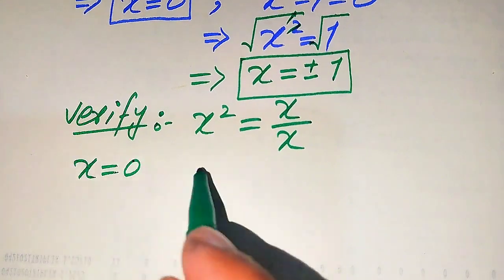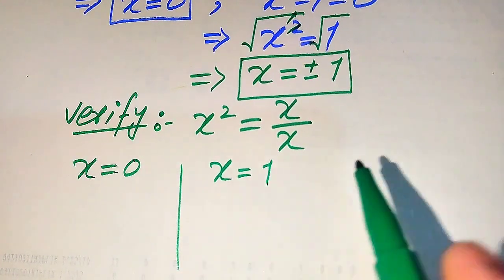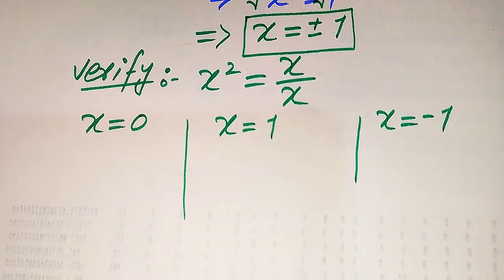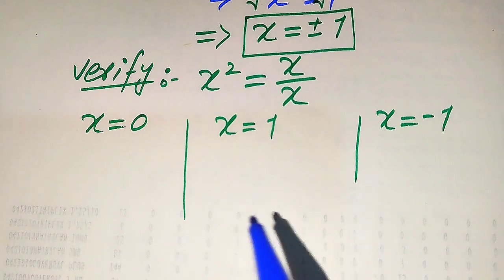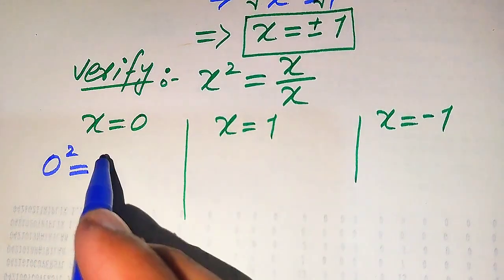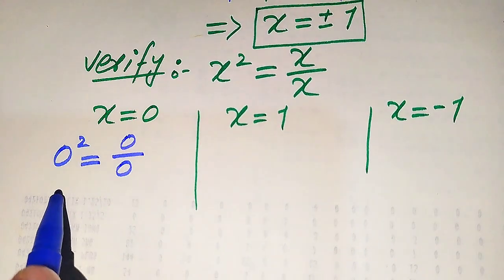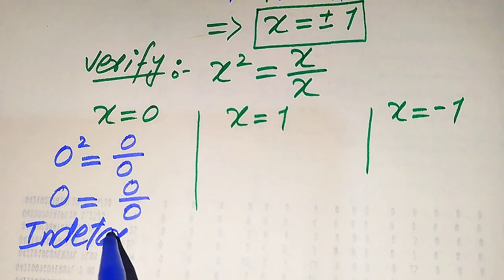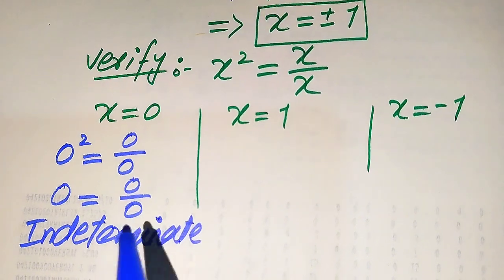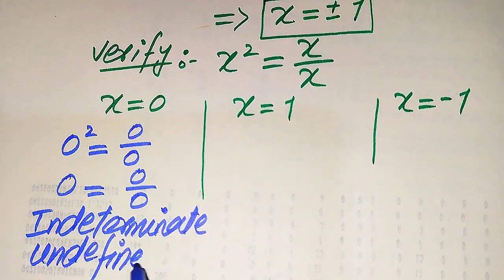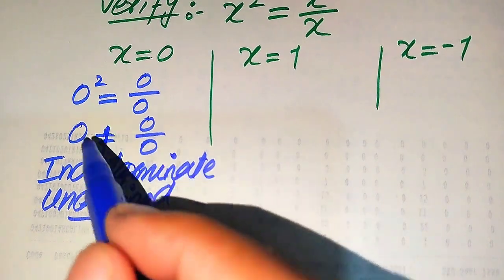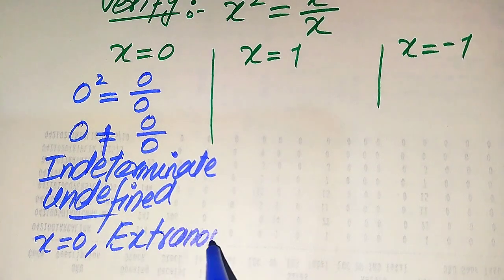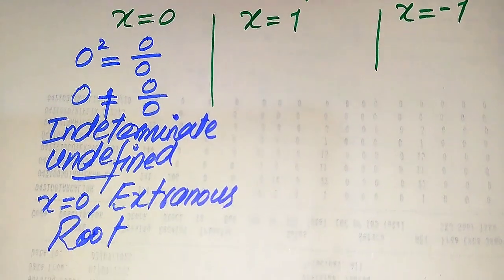We copy the given equation: x squared equals x divided by x. We verify x equals zero on both sides: zero squared equals zero over zero. Zero squared equals zero, and zero over zero is an indeterminate form — in other words, it is undefined. Since both sides are not equal, we conclude that x equals zero is an extraneous root because it does not satisfy the given equation.